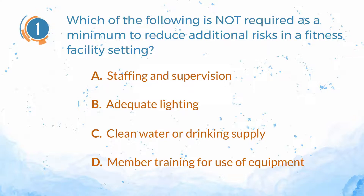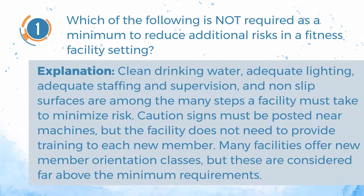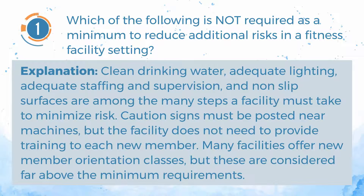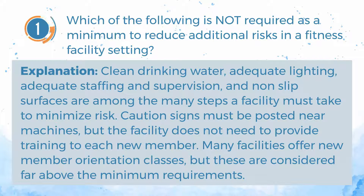The answer is D — member training for use of equipment. Clean drinking water, adequate lighting, adequate staffing and supervision, and non-slip surfaces are among the many steps a facility must take to minimize risk. Caution signs must be posted near machines, but the facility does not need to provide training to each new member. Many facilities offer new member orientation classes, but these are considered far above the minimum requirements.